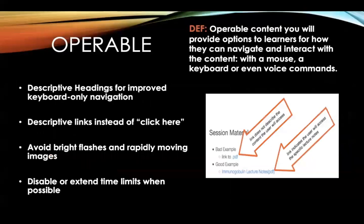Operable content will provide options to learners for how they can navigate and interact with the content with a mouse, keyboard, or even voice commands. For example, learners with visual impairments may not be able to use a mouse to select options on the screen, but they can use keyboard shortcuts or touch gestures to navigate the content by heading or link. Others, such as programmers and power users, may just prefer the keyboard because they are able to navigate faster with it.